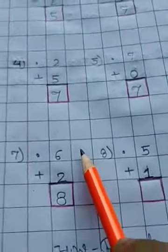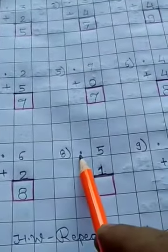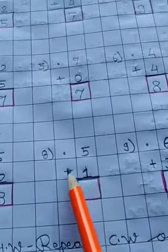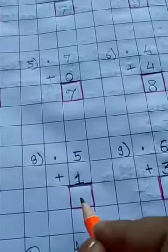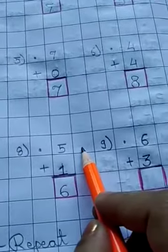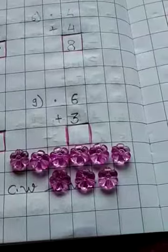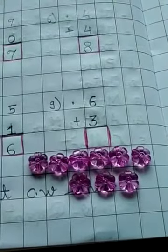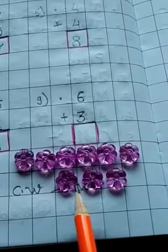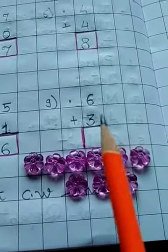Now number 8. Leave this box. Write 8. Do like this, put a dot. Now 5 plus 1. It's very easy. 5 plus 1 is 6. Again, leave this box. Write number 9. Put a dot here. 6 plus 3. Let us count. This is your 6 beads and this is 3 beads. Now add them.